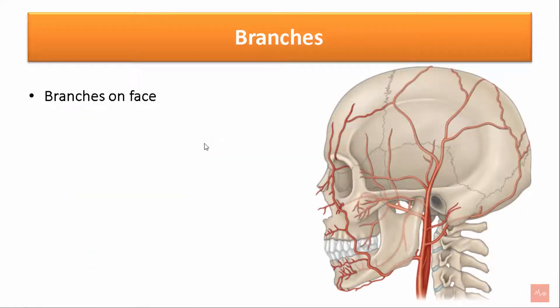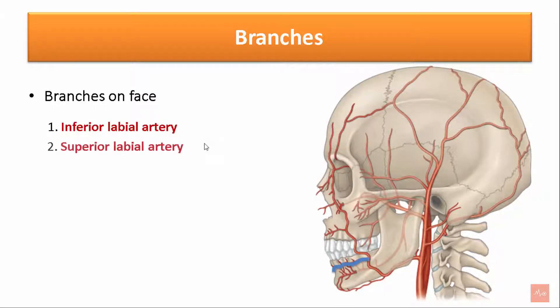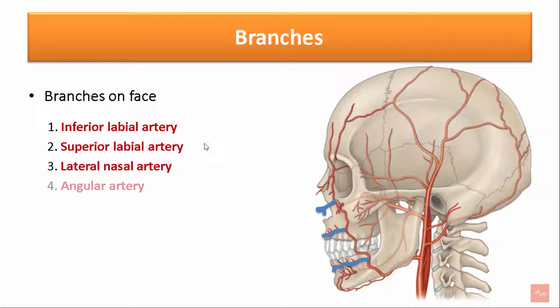The branches of the facial artery on the face are: the inferior labial artery that supplies the lower lip, the superior labial artery that supplies the upper lip, the lateral nasal artery that supplies the ala of the nose and the dorsum of the nose, and the angular artery.